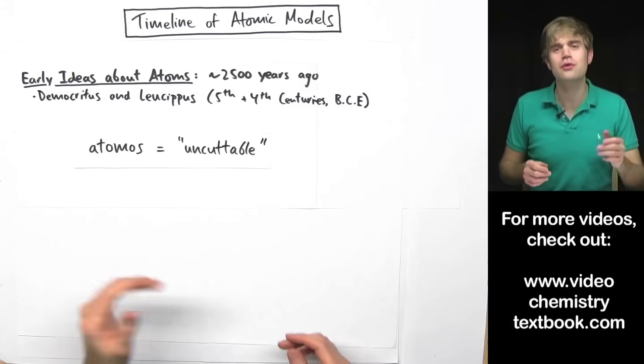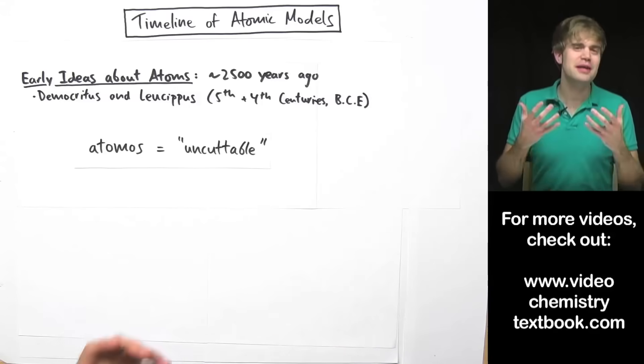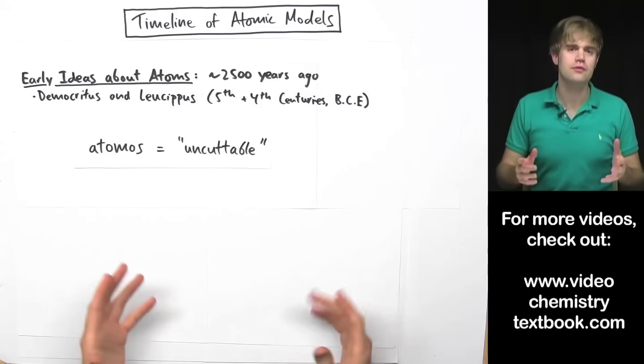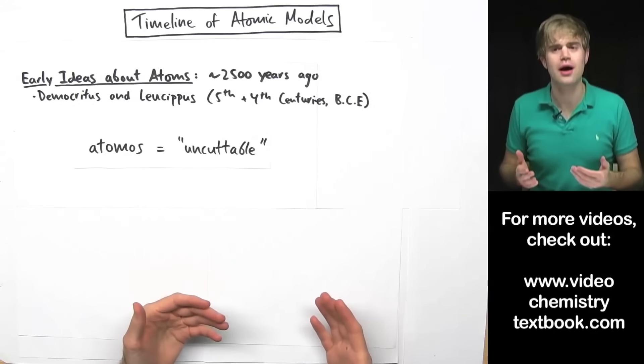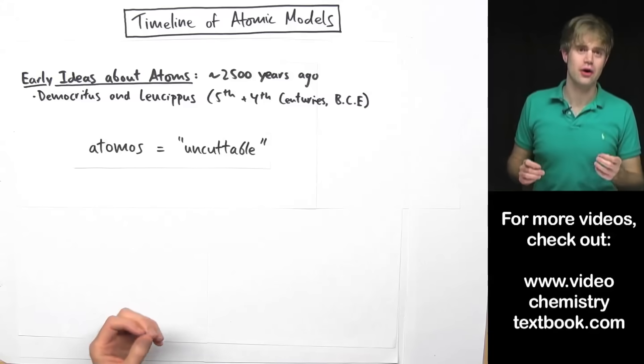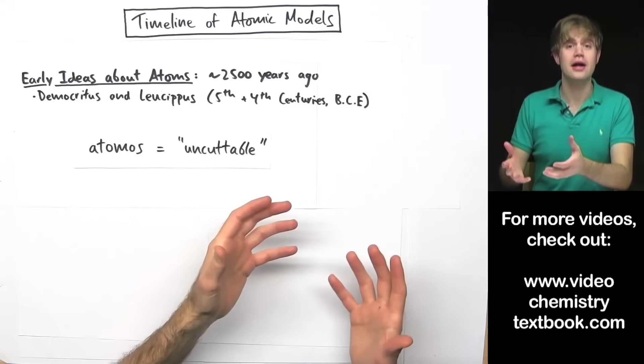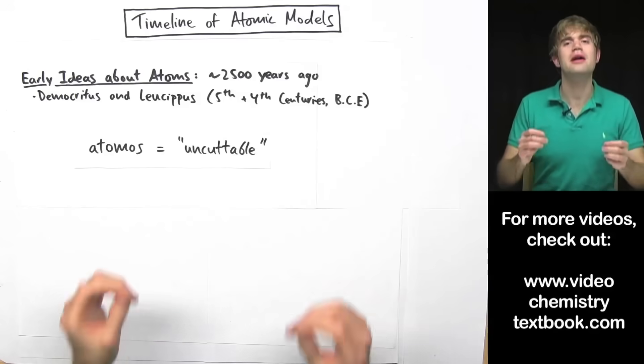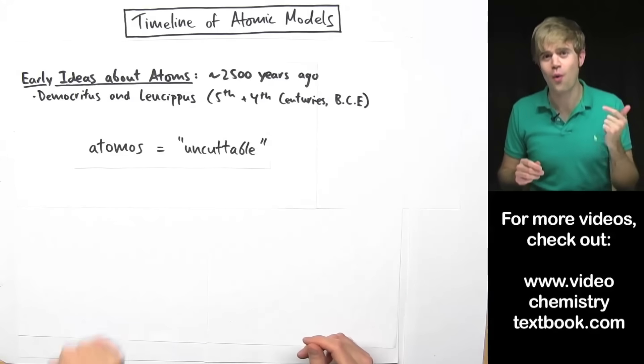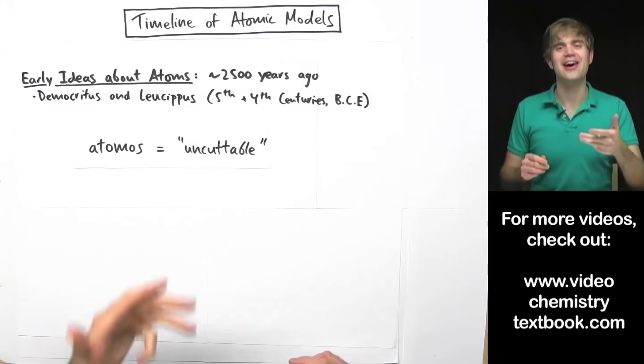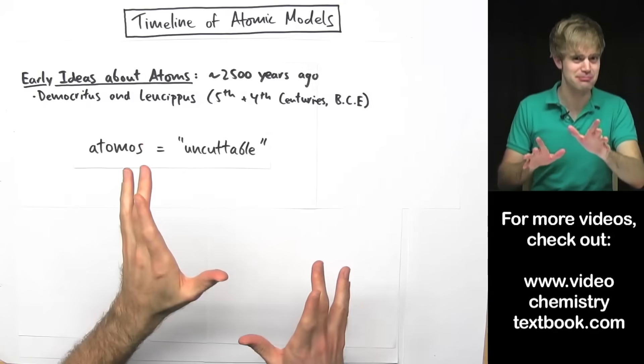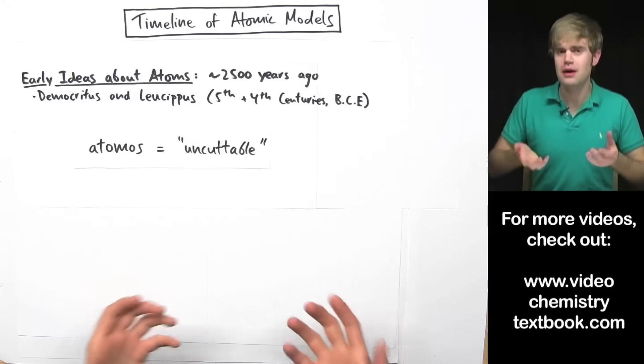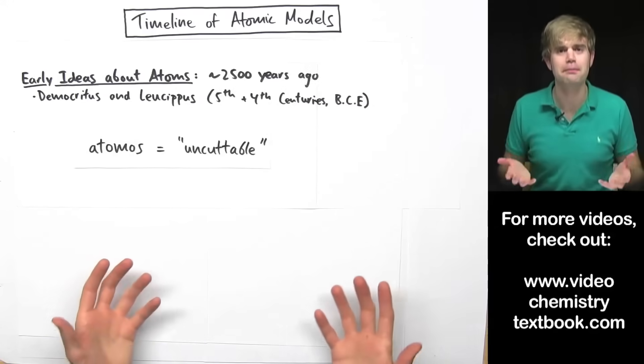So, Democritus was right. But people didn't really take to his ideas. Part of the reason was because around the same time, the well-known philosopher Aristotle proposed his own idea of what matter was made of. He said that different things were made of different amounts of the elements earth, water, air, fire, and ether. This is kind of like Captain Planet if you're old enough to get that reference. And more people believed Aristotle, maybe just because he was so popular already.